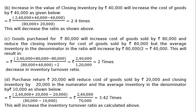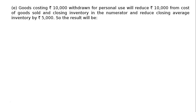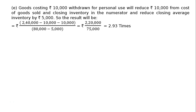Part E: goods costing rupees 10,000 withdrawn for personal use. This reduces cost of goods sold and closing inventory each by 10,000 in the numerator, keeping it at 2,40,000. The average inventory in the denominator reduces by rupees 5,000, giving 80,000 minus 5,000 equals 75,000. The new ratio is 2,40,000 divided by 75,000 equals 2.93 times, which is less than the original 3 times, so Part E decreases the inventory turnover ratio.